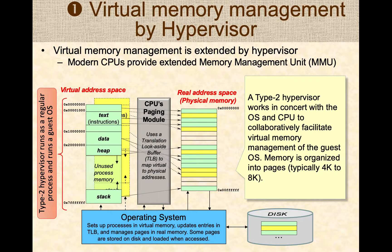Whenever the guest operating system requires some memory to be allocated, the hypervisor will intercept that memory request, work with the host operating system, allocate actual physical memory space for it, and make it appear to the guest operating system that memory has been made available. So every time the guest needs memory allocated, the hypervisor intercepts it, works with the host OS to allocate memory in physical space, and maps it into the virtual address space of the guest. This operation is completely transparent to the guest operating system.